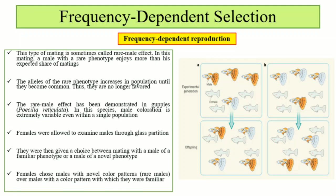An example is guppies, Poecilia reticulata. In this species, male coloration is very variable within a single population. An experiment was done where females were allowed to examine males of different phenotypes through a glass partition. After that, they were given a choice to mate with a male of a familiar phenotype or a novel phenotype. The females chose novel color patterns — those males with rare color patterns had preferred mating.